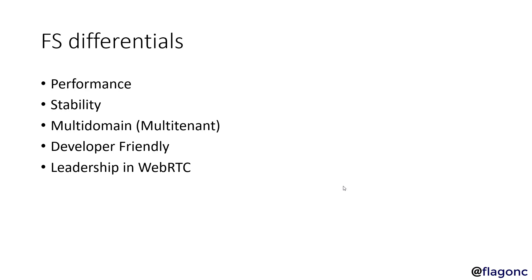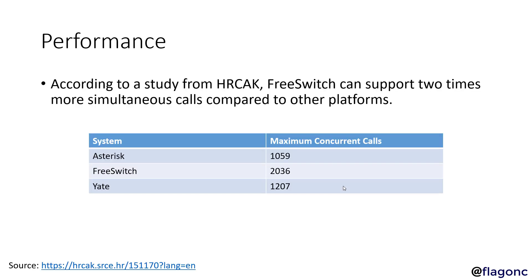The differentials for FreeSWITCH are: performance, stability, multi-domain, developer-friendly, leadership, and WebRTC. On performance, we have reports from the field saying it's four times or two times faster than Asterisk. There is a paper study from HRZZ, a research institute in Croatia, and the paper is available for download. FreeSWITCH can support two times more simultaneous calls compared to other platforms — with independent published results showing almost twice the number of concurrent calls compared to Asterisk and YATE.